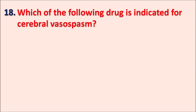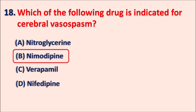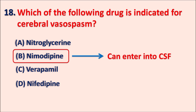Question 18: Which of the following drugs is indicated for cerebral vasospasm? A. Nitroglycerin, B. Nimodipine, C. Verapamil, D. Nifedipine. All listed drugs are vasodilators, but which drug enters the CNS and produces cerebral vasodilation? The right answer is nimodipine. Nimodipine can enter the cerebrospinal fluid and thereby enter the CNS to produce cerebral vasodilation. So this drug acts as a calcium channel blocker producing cerebral vasodilation, and that is why it is used in the treatment of cerebral vasospasm.